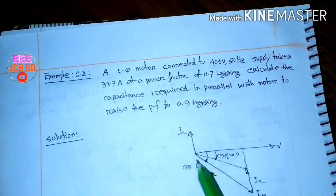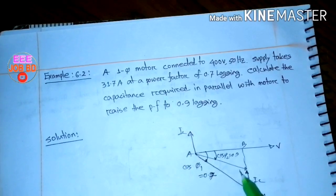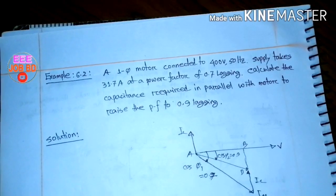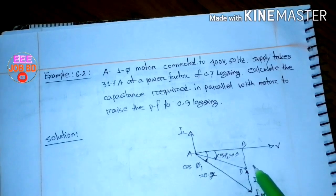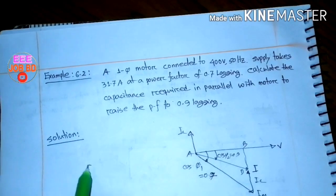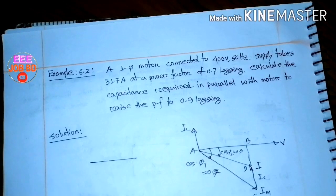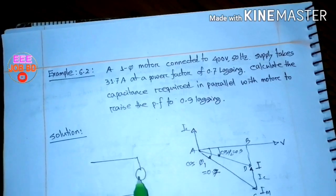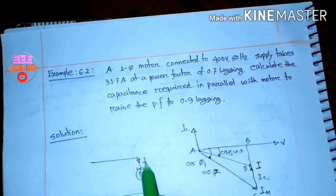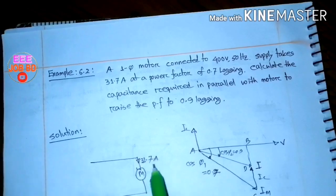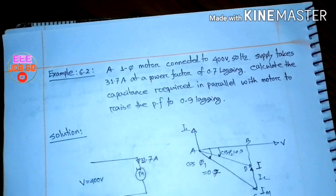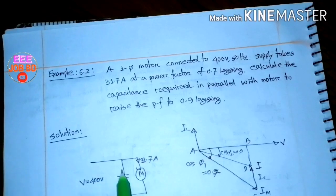The points are labeled A, B, C, D. I will draw a circuit diagram. This is the motor. The motor current is equal to 31.7 amperes. The voltage is equal to 600 volts. First condition: motor only at 0.7 power factor. Second condition: capacitor added in parallel.